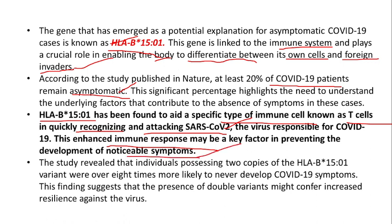This is why many people show symptoms like cough, cold, and feverish feelings that are probably found to be symptoms of COVID-19. Individuals with the HLA-B*15:01 variant were over 8 times more likely to never develop COVID-19 symptoms. So individuals with 2 copies of this particular gene are 8 times more likely to never develop COVID-19 symptoms and will not be symptomatic.